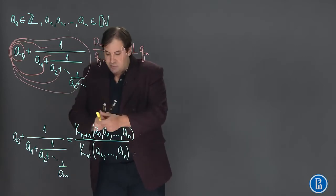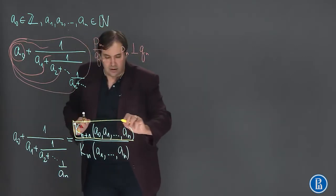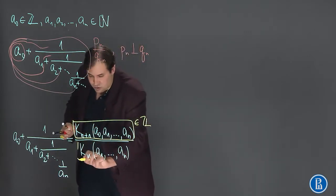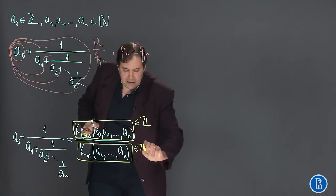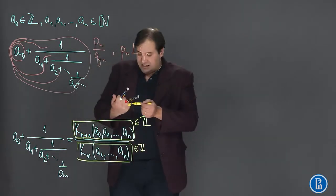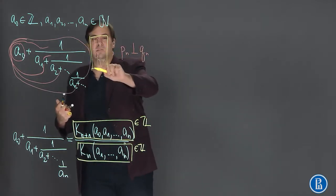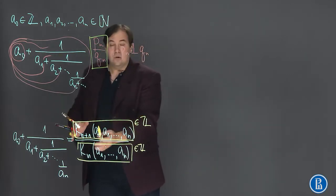This is an integer number and the denominator is also an integer number. So we understand that fraction P_n over Q_n is equal to the fraction K over K.